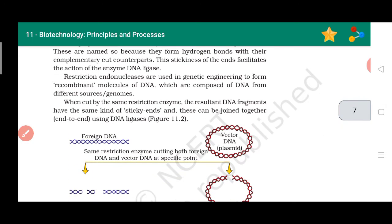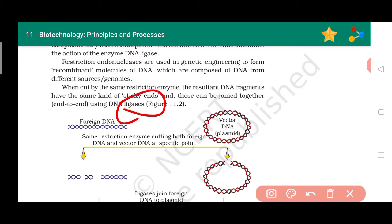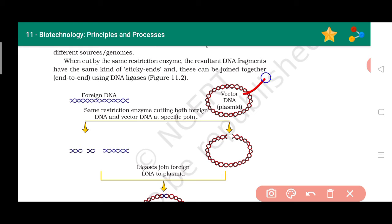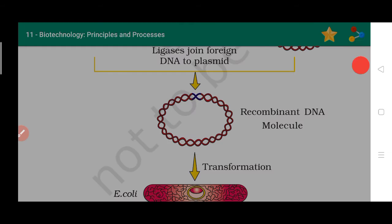When the restriction enzyme cuts, it identifies the six base pairs and cuts slightly away from them. Because of this, sticky ends are produced. When sticky ends are produced, they are joined by another enzyme — that enzyme is known as DNA ligase. Here in the diagram, the foreign DNA and the vector DNA (plasmid) are cut, and then joined together. When they are joined, this new DNA is known as recombinant DNA.